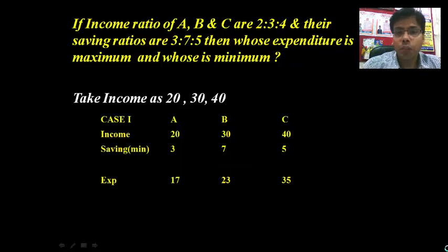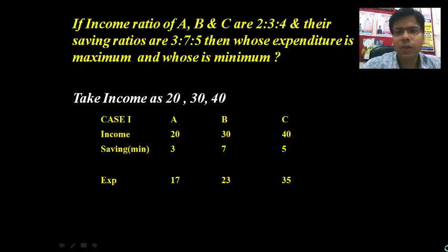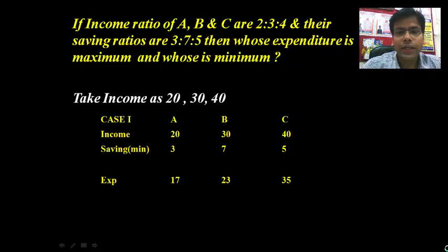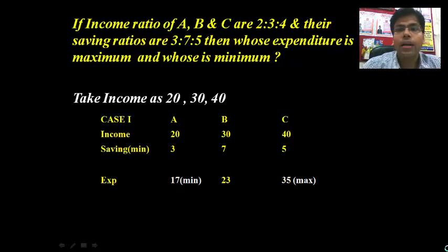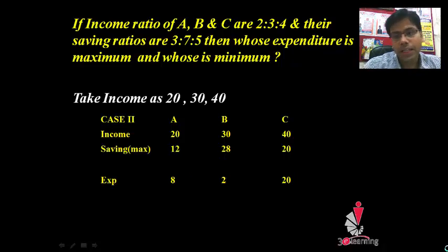Working in Case 1: fixed income as 20, 30, 40. Savings minimum is 3:7:5, the minimum ratios multiplied by 1. Expenditure of A becomes 20 minus 3 = 17, B is 30 minus 7 = 23, C is 40 minus 5 = 35. So we calculate expenditures on these savings. By this we can say 17 is the minimum value, so A's expenditure is minimum and C's is maximum.